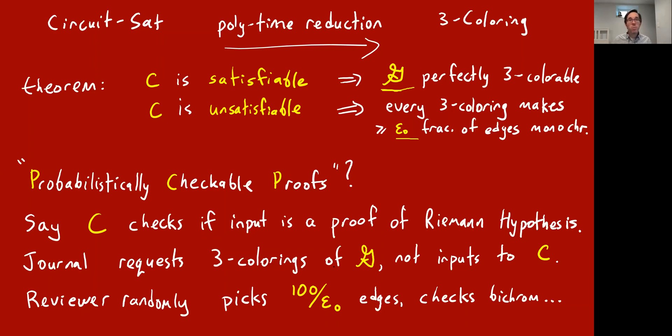That's why it's called probabilistically checkable proofs. But that said, that was actually how it was originally conceived, but people eventually realized it was kind of equivalent to this much more mundane thing, the NP-hardness of approximately solving satisfiable CSPs, like three colorability.